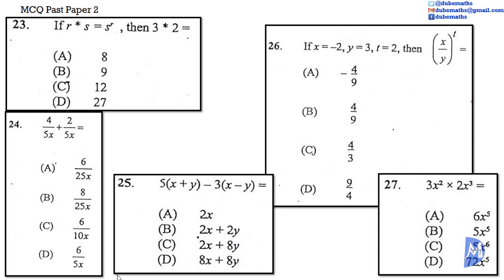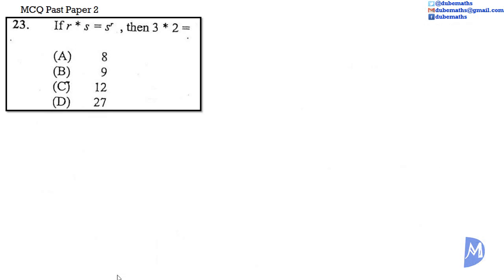Okay, let's go. If R asterisk S is equal to S to the power R, then 3 asterisk 2 is equal to: is it A, 8; is it B, 9; is it C, 12; or is it D, 27? If R asterisk S is equal to S to the Rth power...